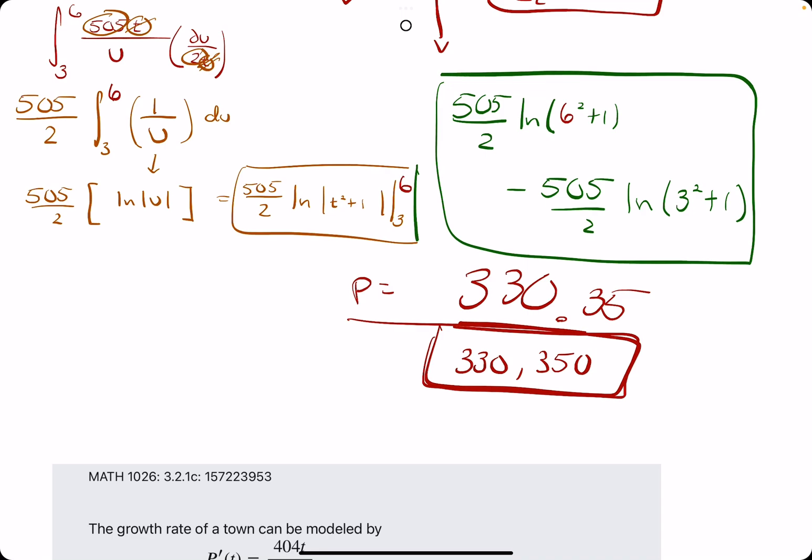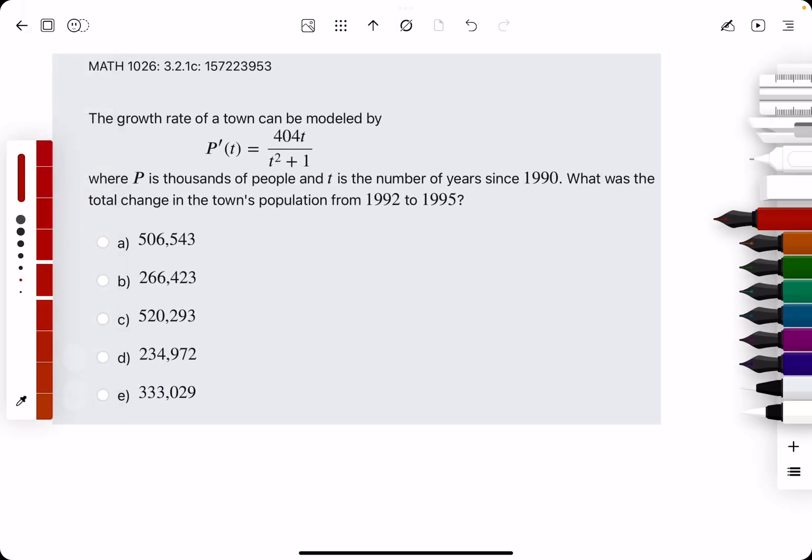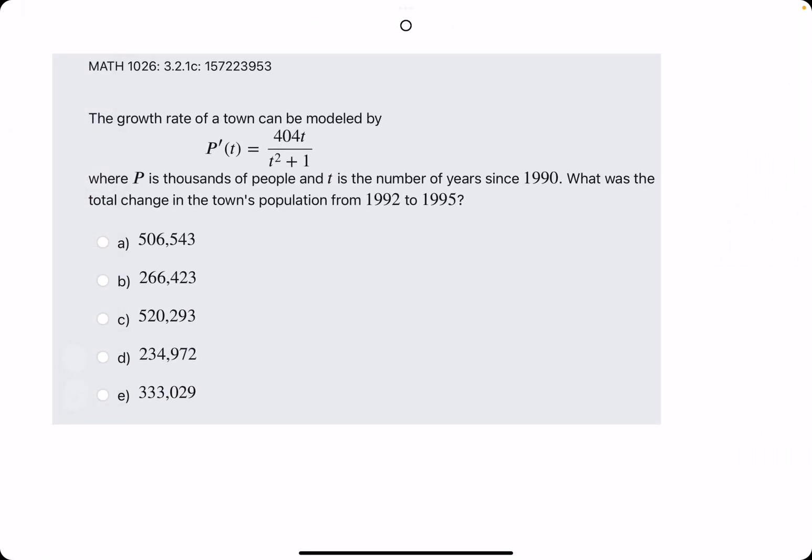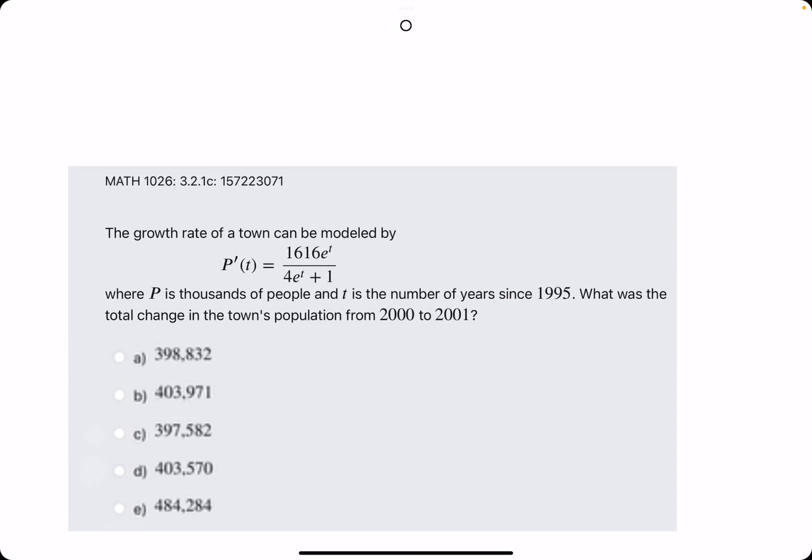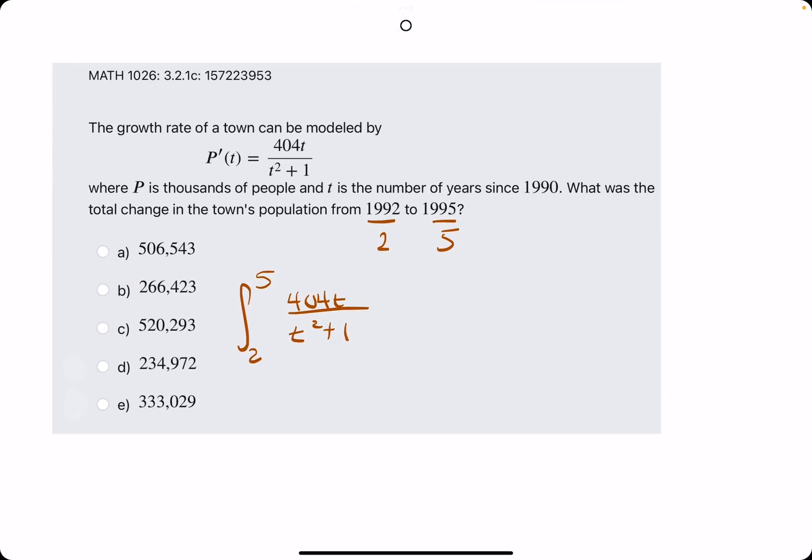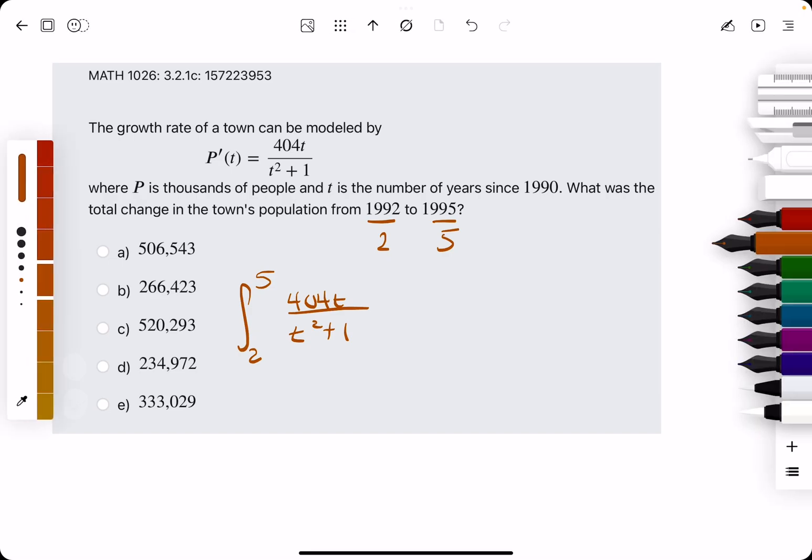I don't know where 5 came from. But let's move on to another example or two. Same exact method integrating now from 2 to 5 of P prime. So 404T over T squared plus 1. Curious. They do have different functions. So we'll get to an E example for the last one.